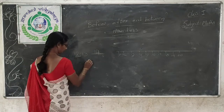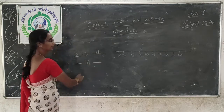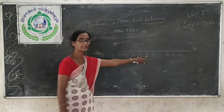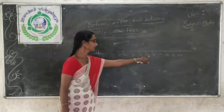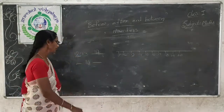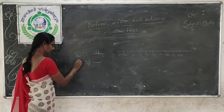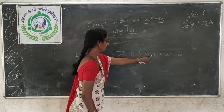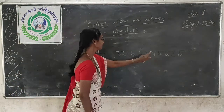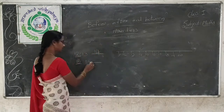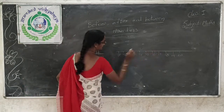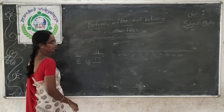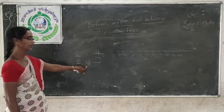One more example: 16. Which number comes before 16? 15. So 15 comes before 16. And after 16, which number is there? 17. So 17 comes after 16.